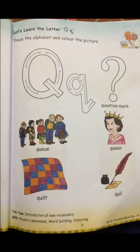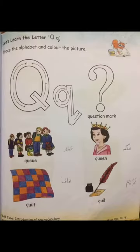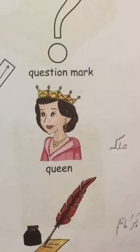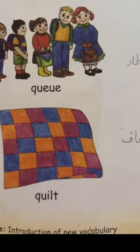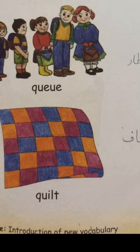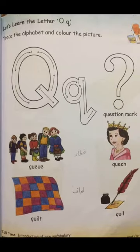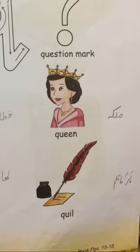The next one is Q — queen, iska matlab hai malka. The next one is Q — quilt, yaani ki lihaaf. The last one is Q — quill, yaani ki par ka qalam. Par yaani ki feather jo hote hain kisi bhi parinde ke, us par se jo qalam banta hai likhne ke liye, usko kehte hain quill.